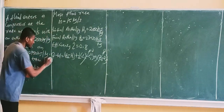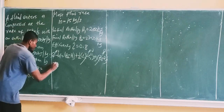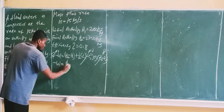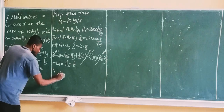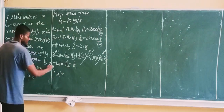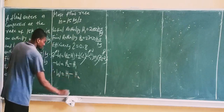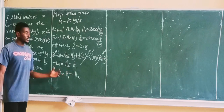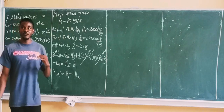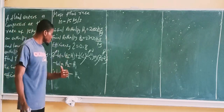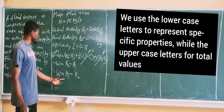So we consider that heat transfer is negligible. The equation becomes minus W equals H2 minus H1. Therefore, the work done is H1 minus H2. If this work done is positive, it means the equipment is a turbine. But if the work done is negative, it means the equipment is a compressor.